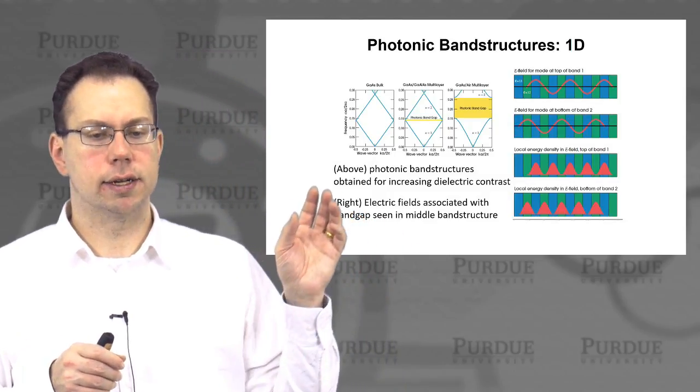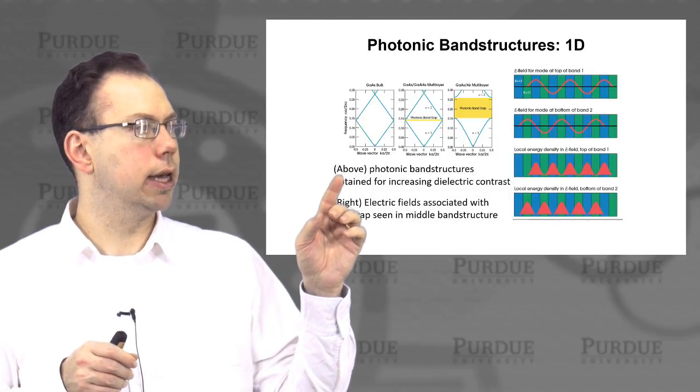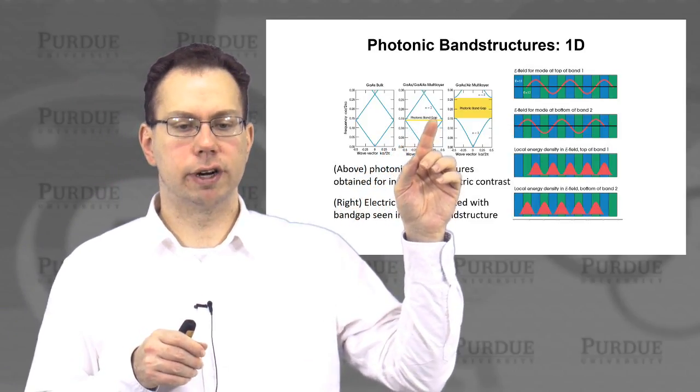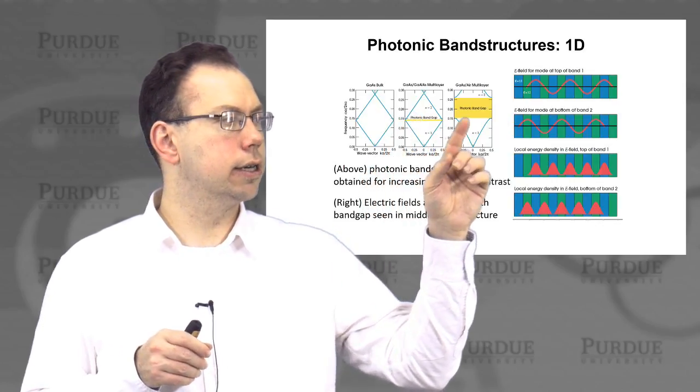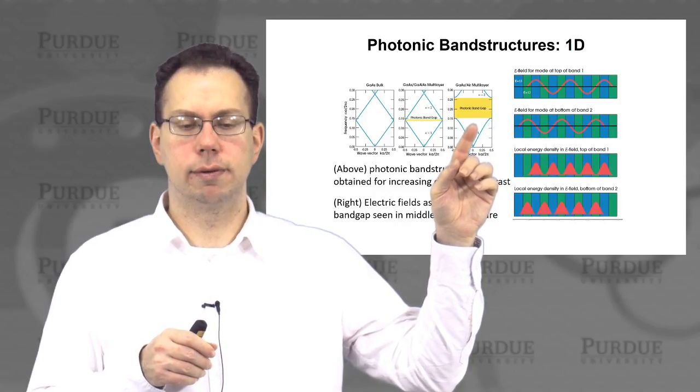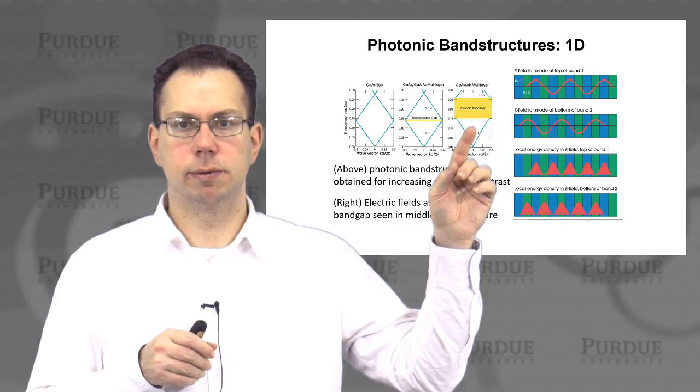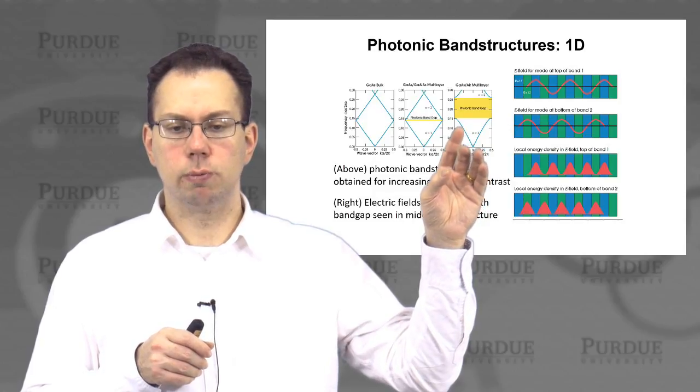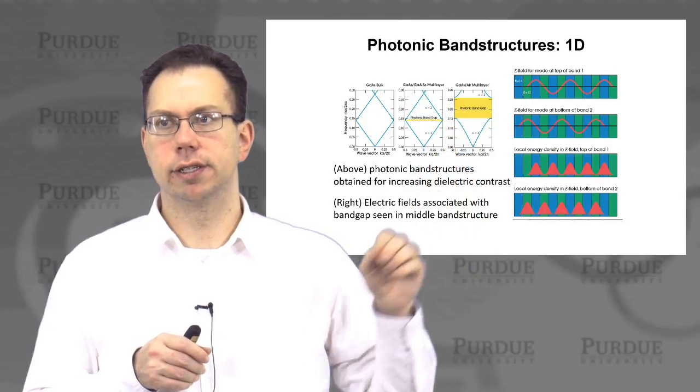However, once you add in two different layers, so different refractive indices, then you create a band gap. And if you have like a very small index contrast, then you have a small band gap. However, as the index contrast becomes larger, in this case, you can see on the third graph that there's basically gallium arsenide and aluminum arsenide, which are MBE growth compatible because they have almost the same lattice constant, then you get a much more pronounced band gap or range of frequencies that are fully reflected across all wave vectors or angles.